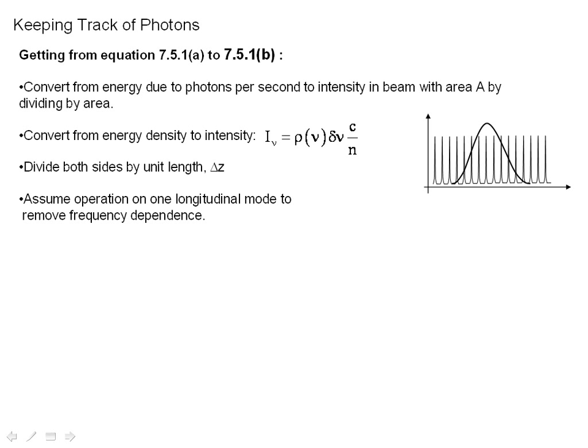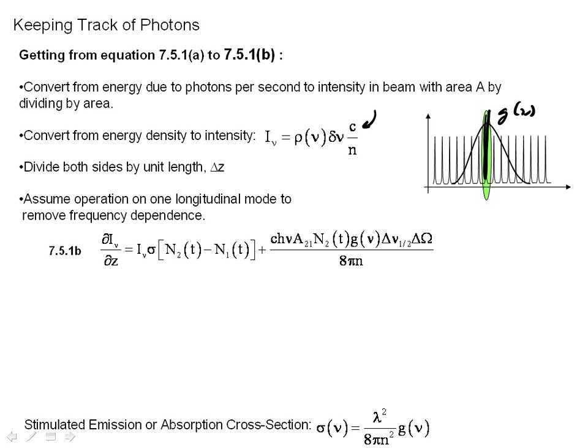We convert the energy density to an intensity. Remember, we talked in one of the last mini lectures about converting from intensity to energy density through this equation right here. We divide both sides by the unit length delta z. And we're going to assume operation on one longitudinal mode. Because the last thing I want to do is take into account the frequency dependence of this line shape, particularly if I have a lot of longitudinal modes. So what I'm going to assume is the laser operates only in one of these longitudinal modes. When I do that, I can only look at that one longitudinal mode and remove the frequency dependence. And that will give me 7.5.1b.